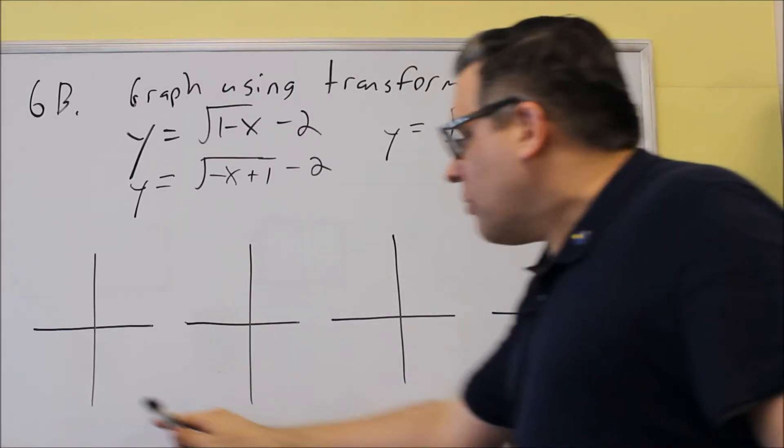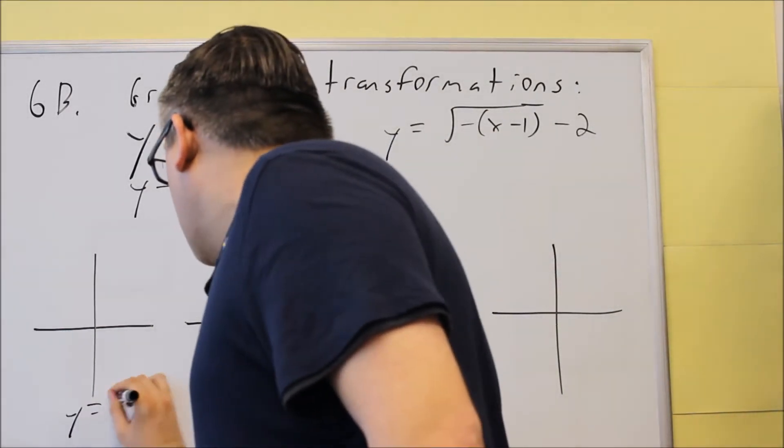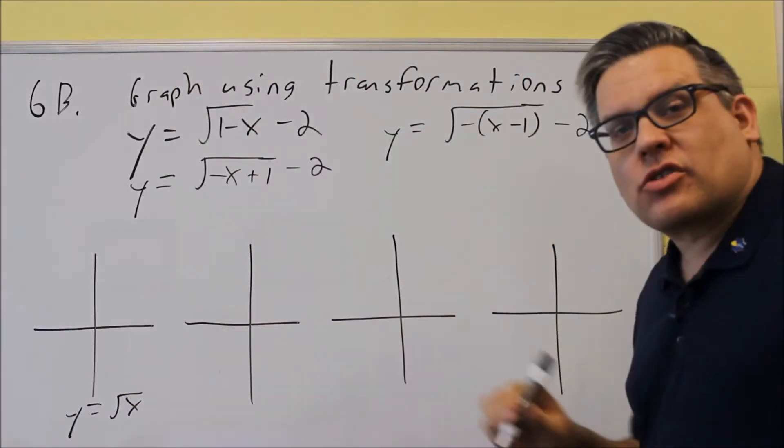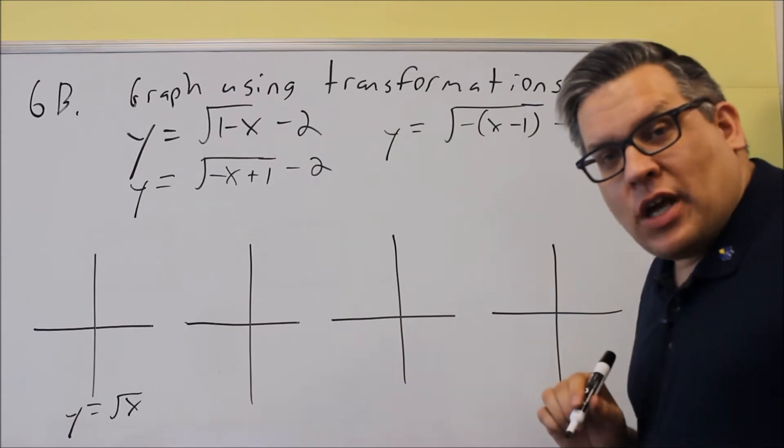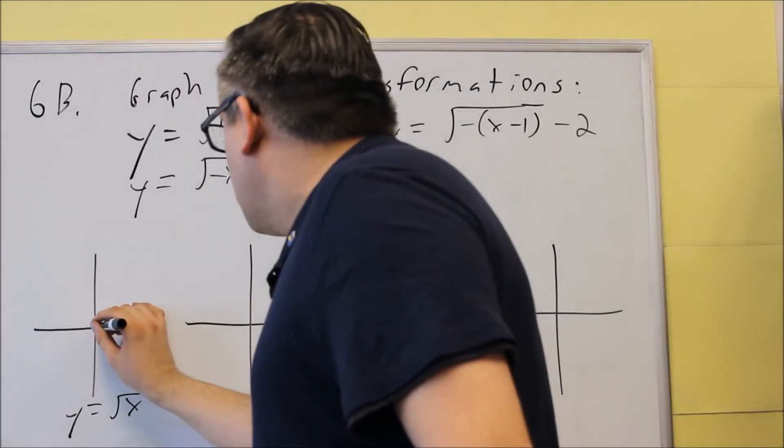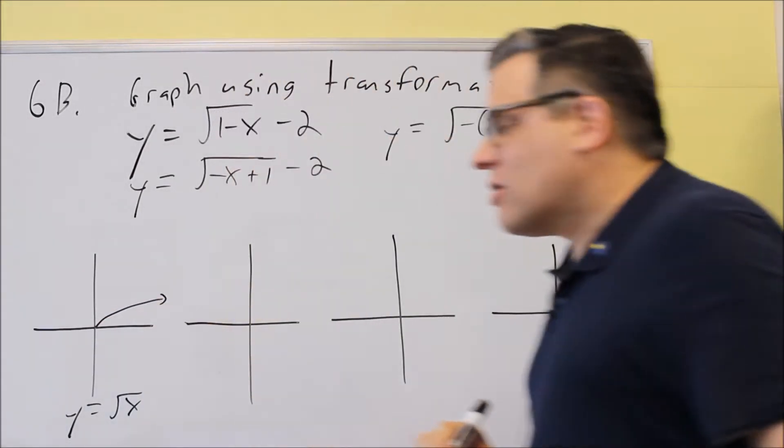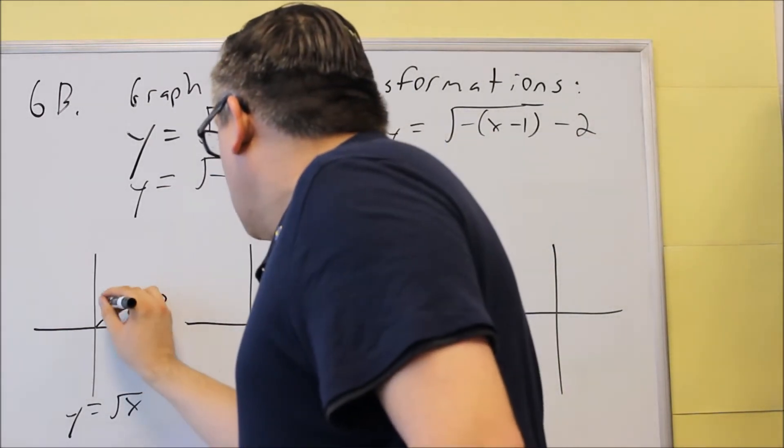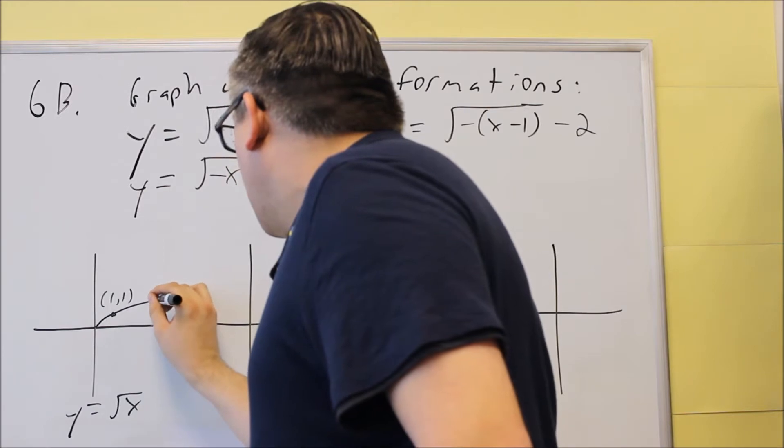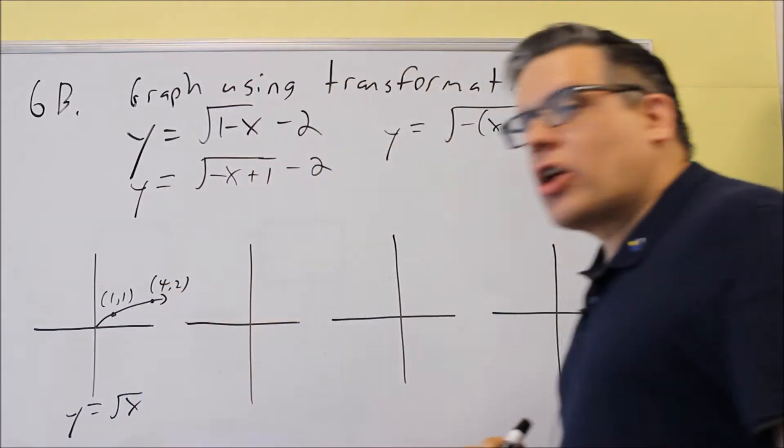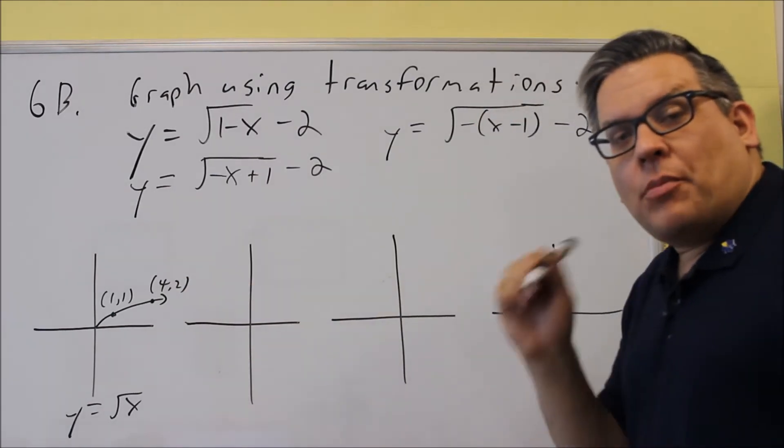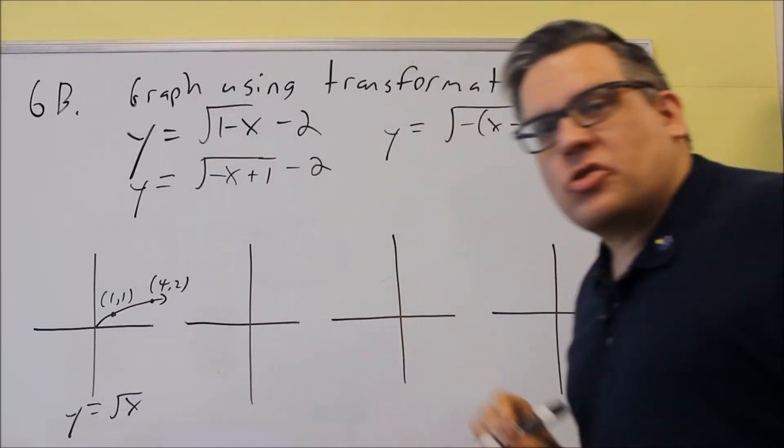So when we do our base graphs here, we're first going to start with the correct library function. For this one, we've got to use the square root of x as a base. Now that one looks like this. That's the kind of shape that it does. It's going to go through (1,1), and it also goes through (4,2), and this information basically comes from our base graph. It also goes through (0,0).